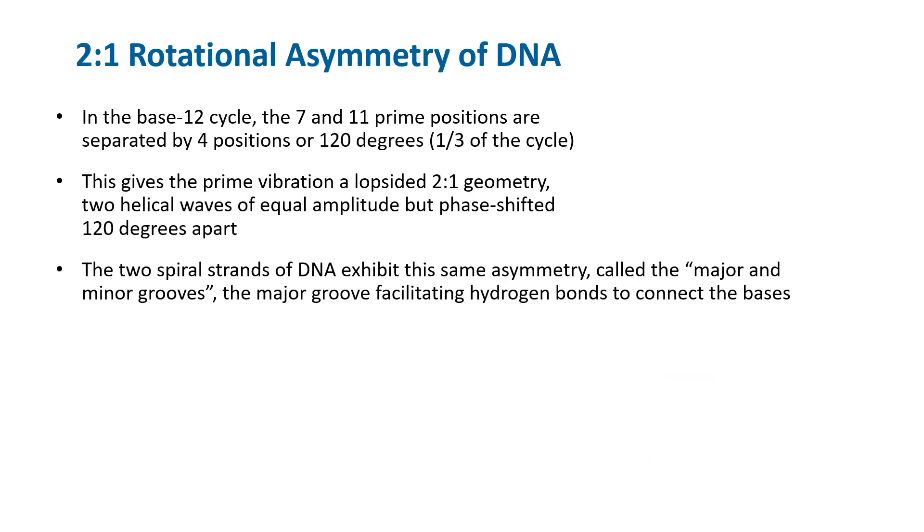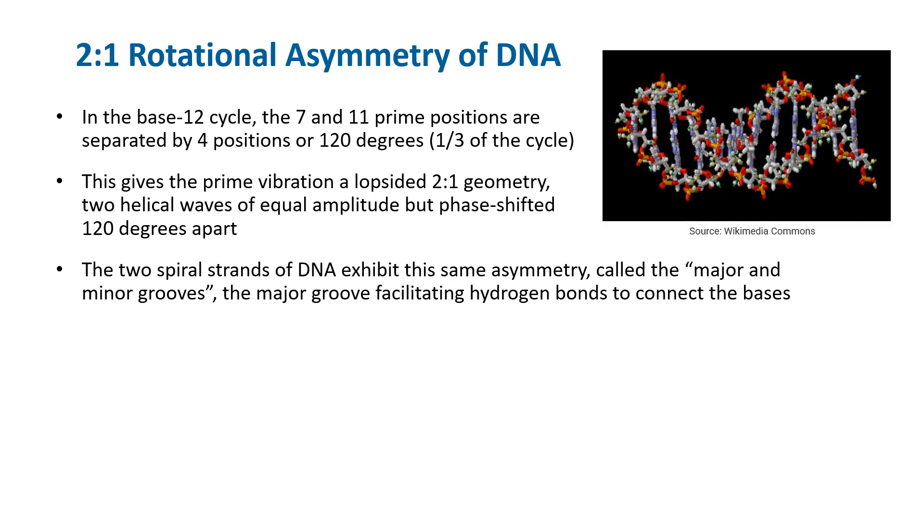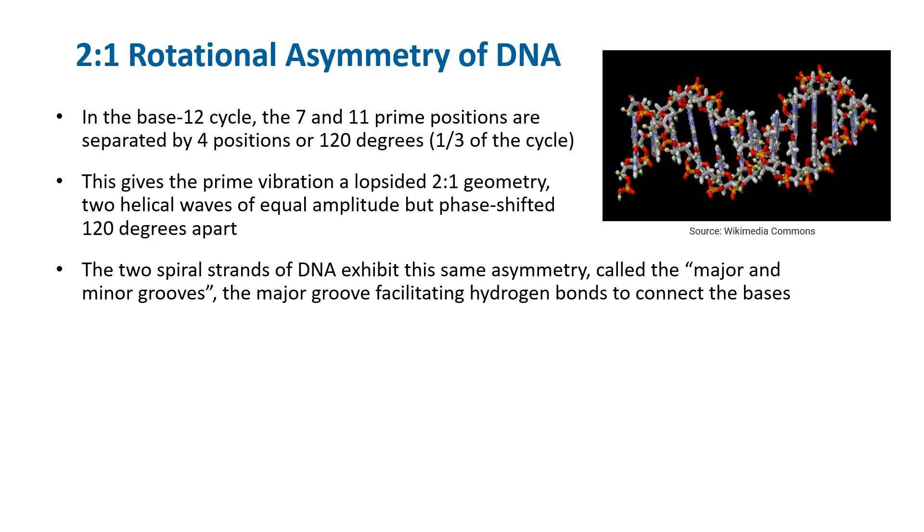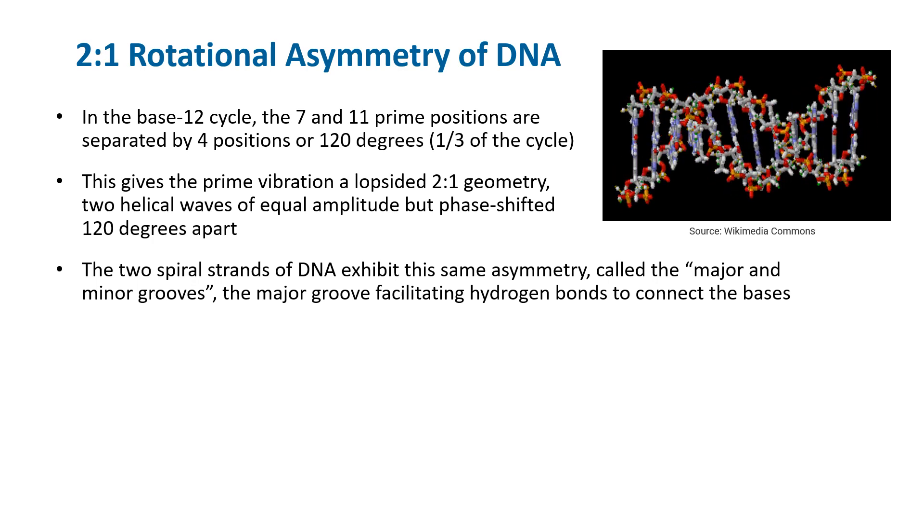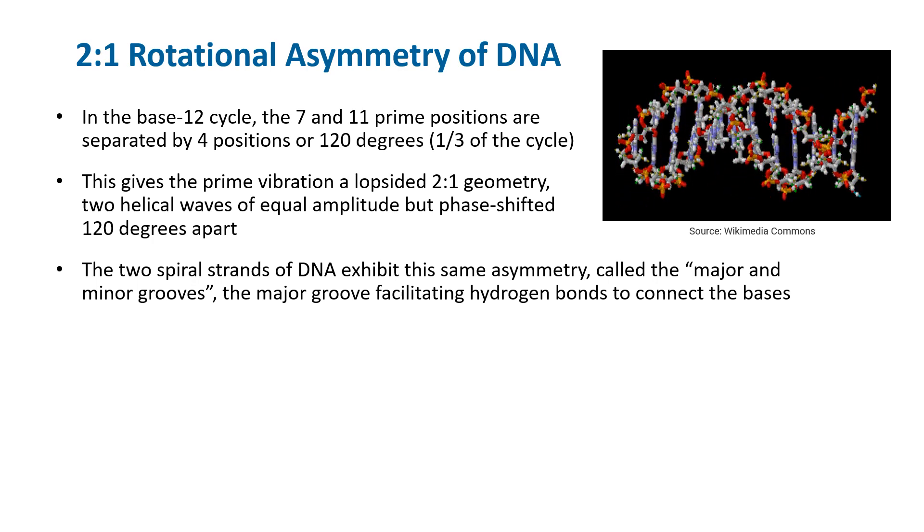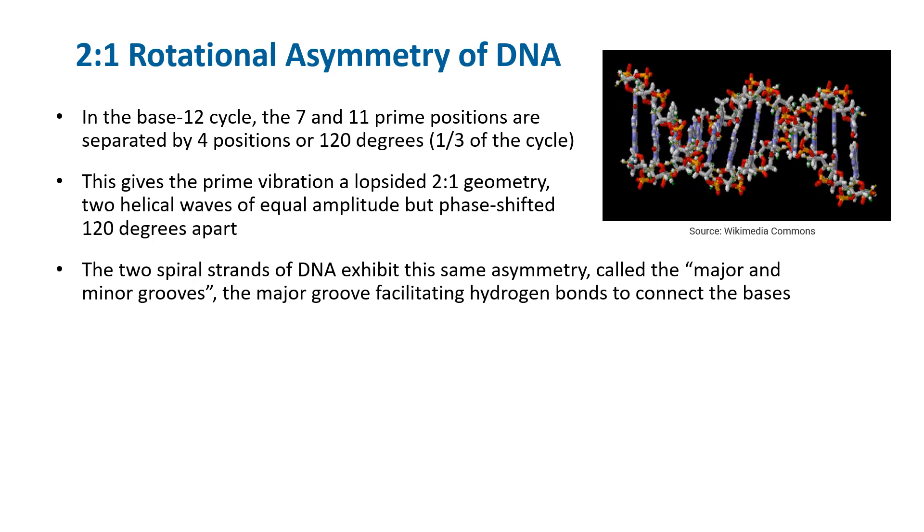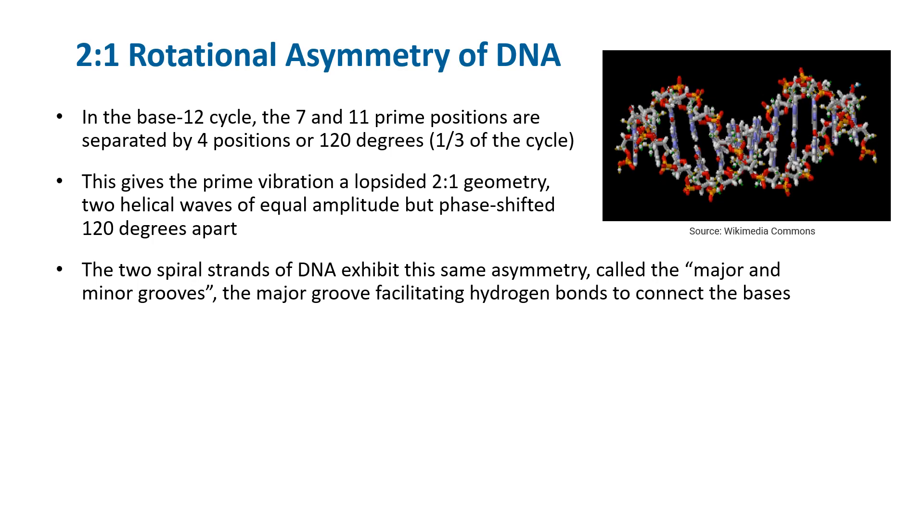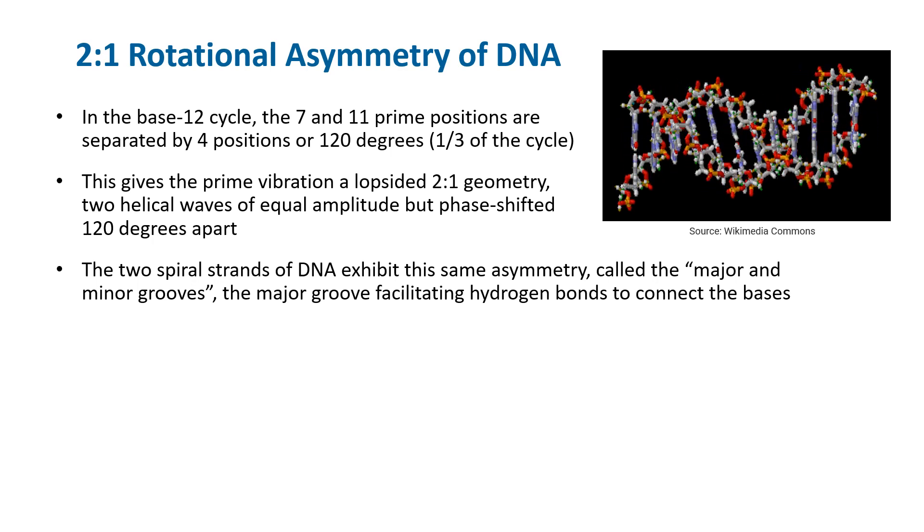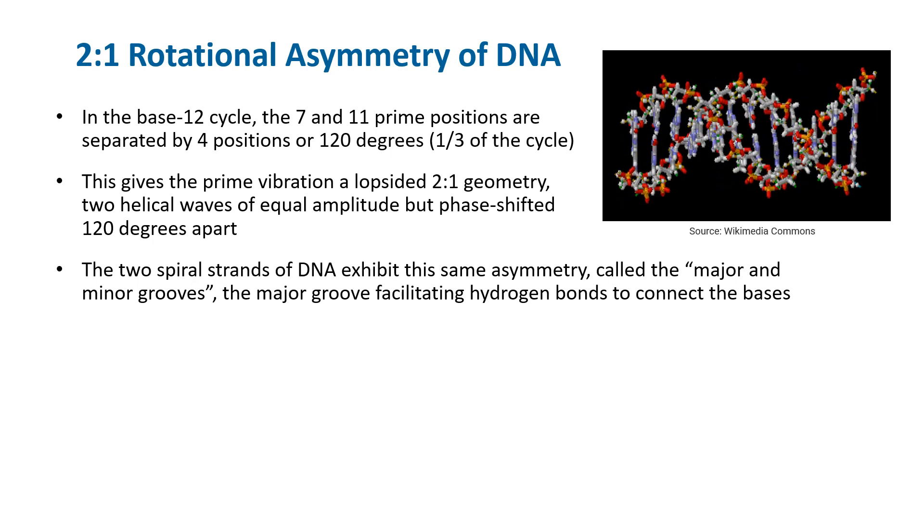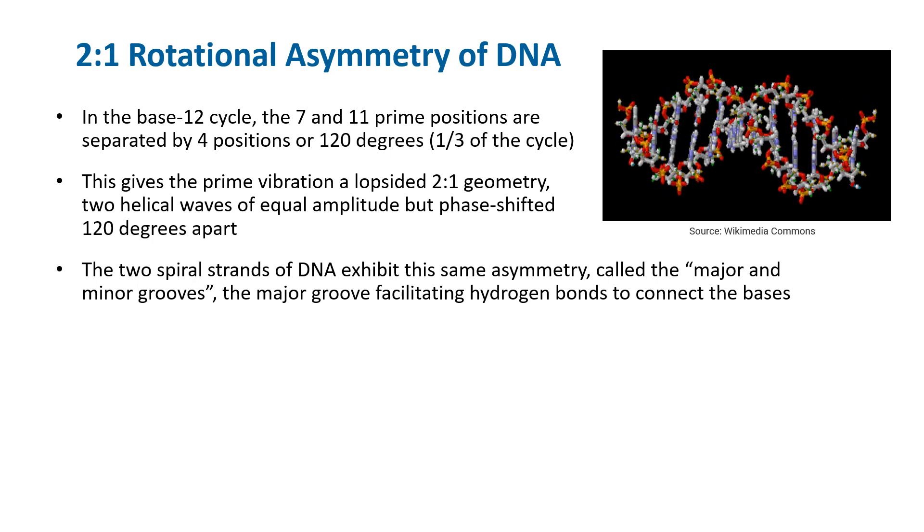However, because the 7 and 11 prime positions are separated by four positions, or basically one-third of the base-12 cycle, the prime vibration has a lopsided 2 to 1 geometry, two helical waves of equal amplitude but staggered four positions apart. Sure enough, the two spiral strands of DNA exhibit this same asymmetry, called the major and minor grooves, which serve an important purpose. The major groove makes it easier for the hydrogen bonds to connect the bases.